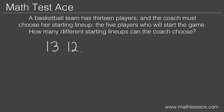There are 11 choices for the 3rd player, because 2 players are already taken. 10 choices for the 4th player, because 3 players are already taken. And 9 choices for the 5th player, because 4 players are already taken.